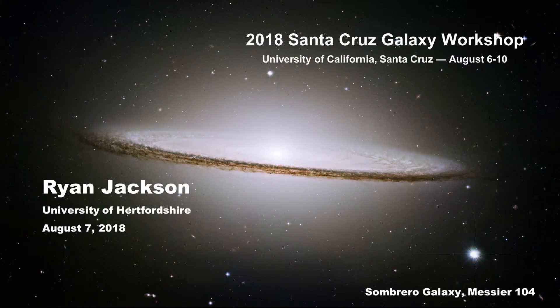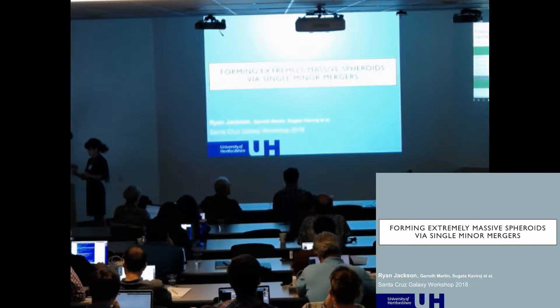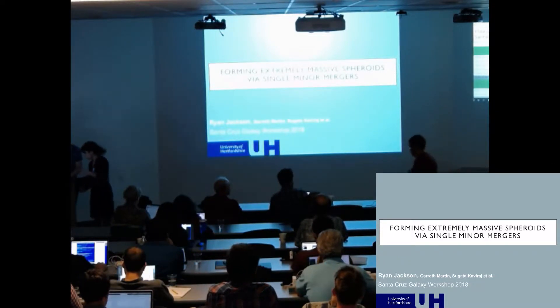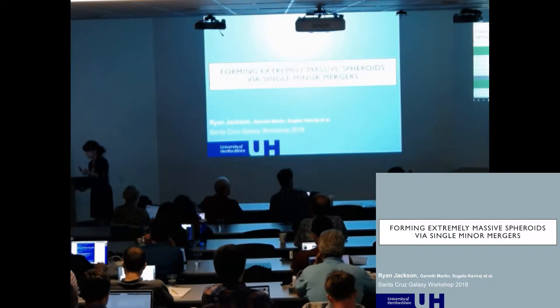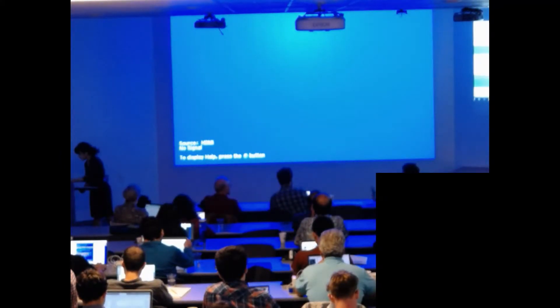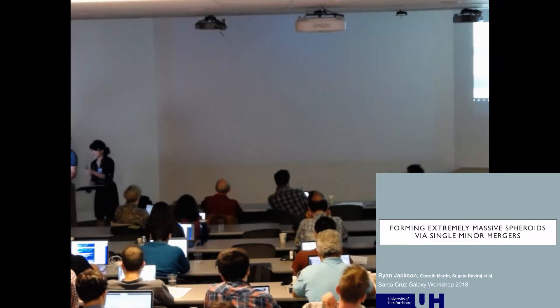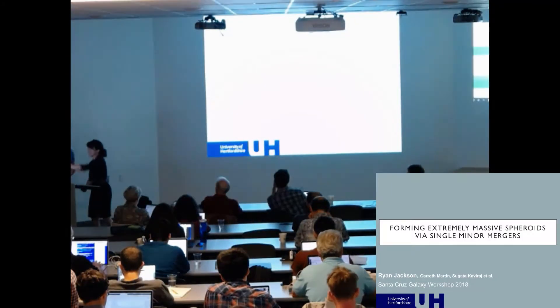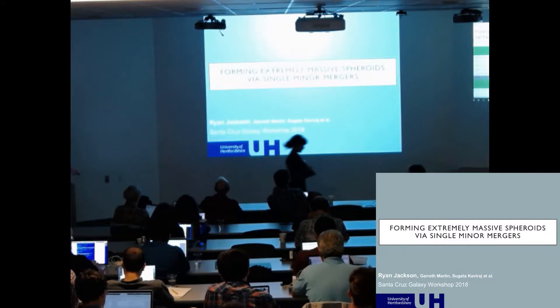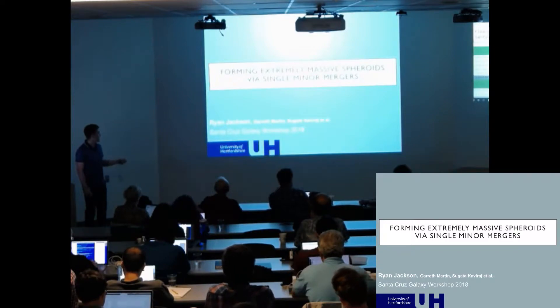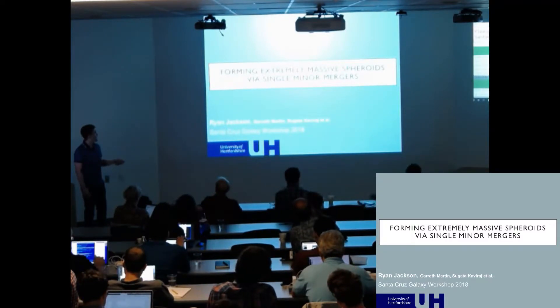And coming up now we have Ryan Jackson who's going to tell us how to make spheroids through single minor mergers. Okay, so I'm Ryan Jackson and I'm a first year PhD student from the University of Hertfordshire in the UK, and I'm going to be talking about forming extremely massive spheroids via a single minor merger.